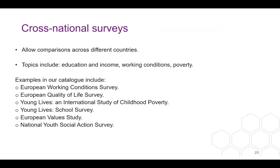There is another type of micro data worth mentioning: cross-national surveys. Cross-national surveys use the same survey instrument and where possible the same methodology and fieldwork protocols, allowing comparisons to be made across many countries and nations. Common topics covered include education, income, working conditions and poverty. Examples in our catalogue include the European Working Conditions Survey, European Quality of Life Survey, Young Lives: International Study of Childhood Poverty, Young Lives School Survey, European Values Study and the National Youth Social Action Survey.